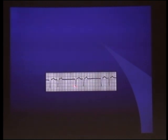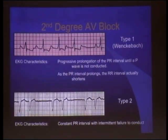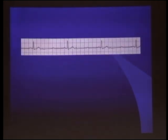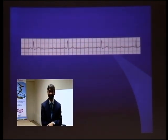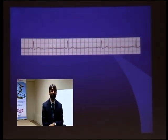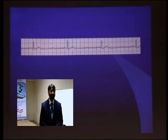You have 2 P waves before this QRS — that is Wenckebach, Mobitz type 2. There is no 3rd degree here because the PR is fixed. You do not have a fixed PR in 3rd degree heart block.